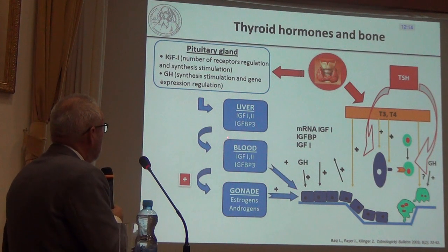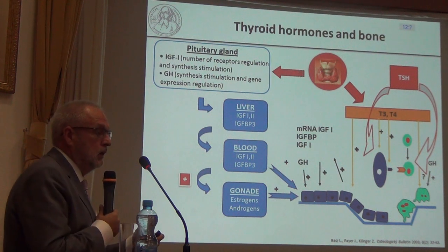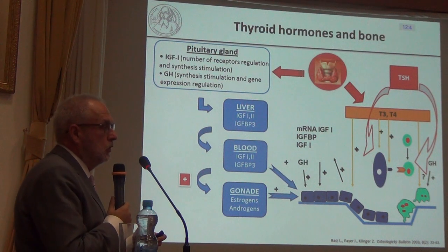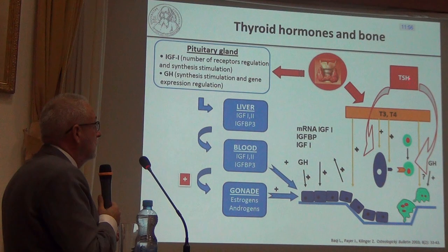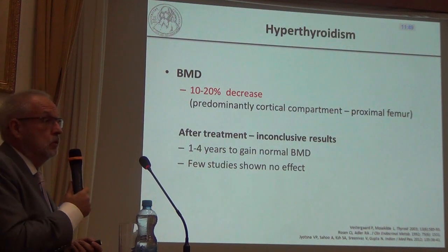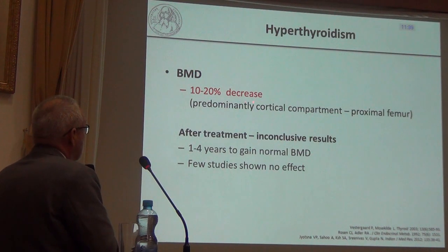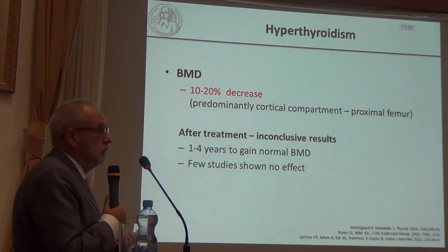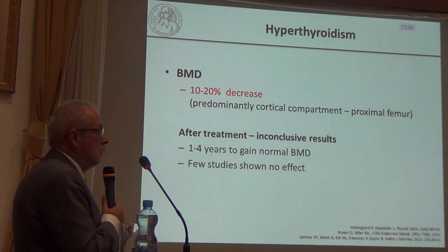Thyroid hormone imbalances represent another large group of at-risk premenopausal patients. Thyroid hormones increase osteoclast activity and thus bone resorption via multiple mechanisms; the positive effect of TSH on osteoblast activity exists but is less pronounced. Patients with hyperthyroidism are at highest risk — BMD is decreased in this group, and there are also data showing a very high fracture risk, including after treatment.